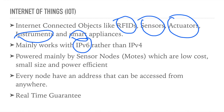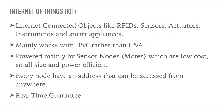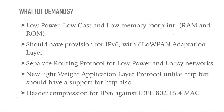IoT mainly works with IPv6 — we will come to what IPv6 and IPv4 are shortly. It is powered mainly by sensor nodes, or MOTES, which are low cost, small size, and power efficient — miniaturized devices that are highly efficient in power. Every node has an address, so it can be accessed from anywhere, and IPv6 addresses are used for this. Real-time guarantee is also present, so further processing will not be delayed.